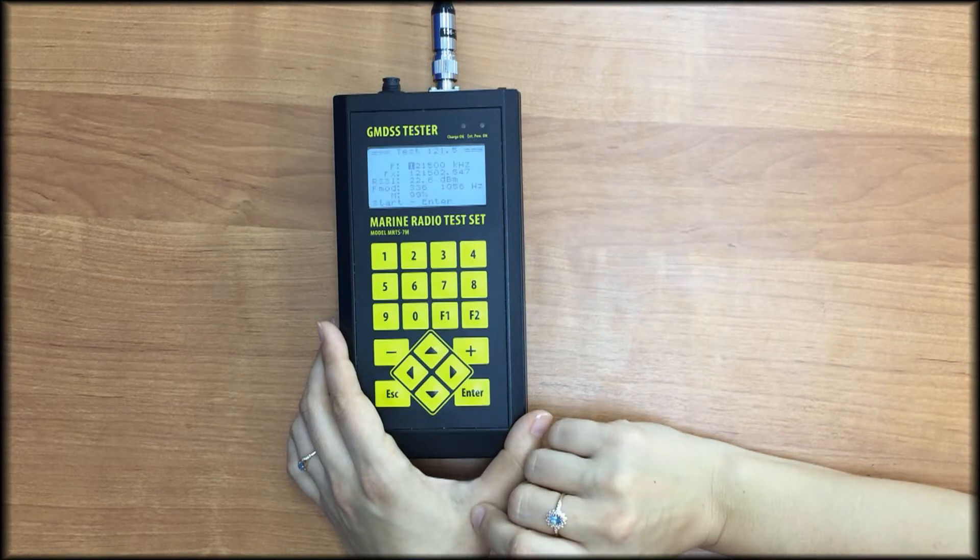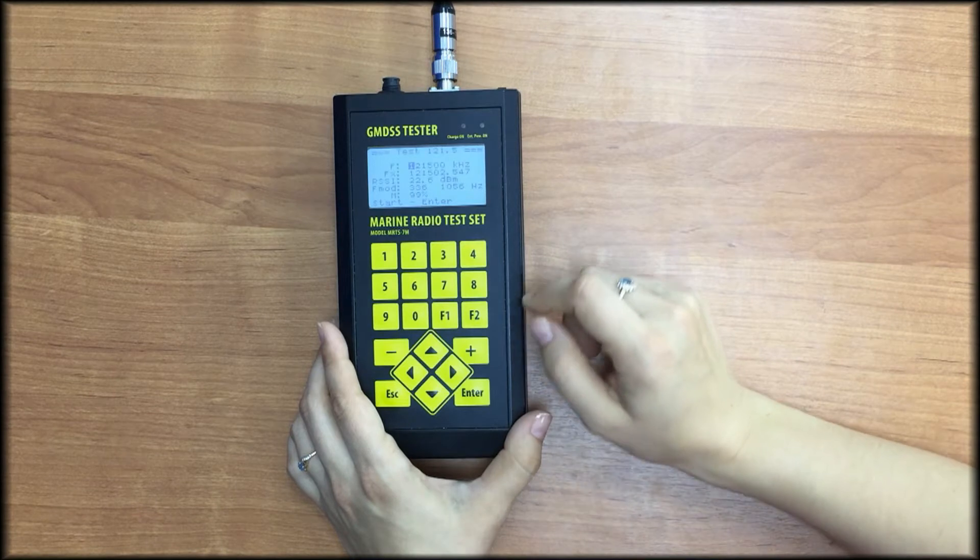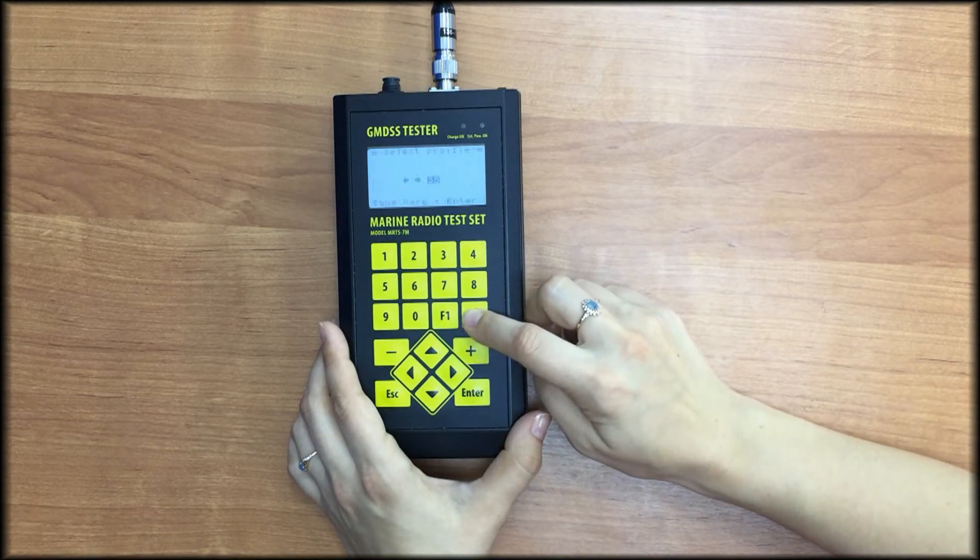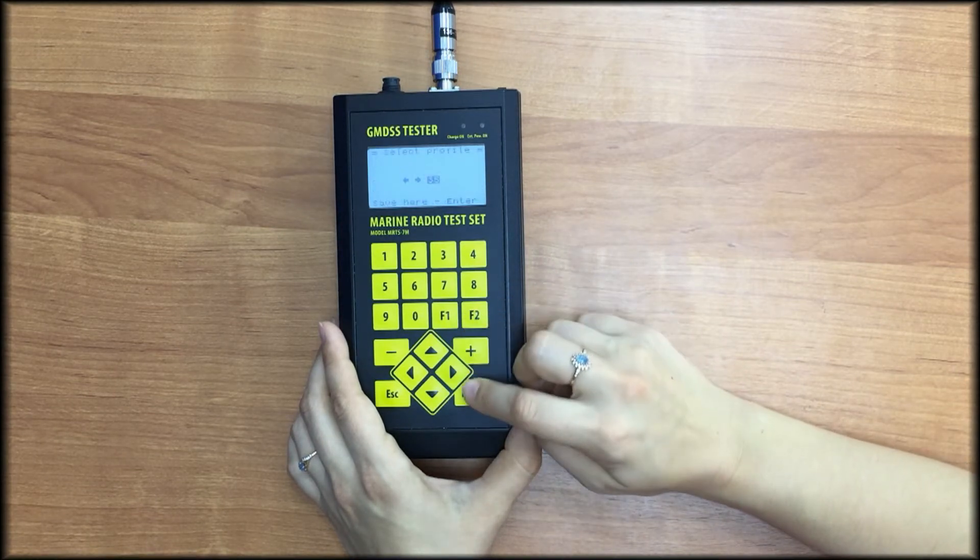Modulating audio frequency variation limit, amplitude modulation depth. Press F2 to save results. Press enter to confirm the profile number.